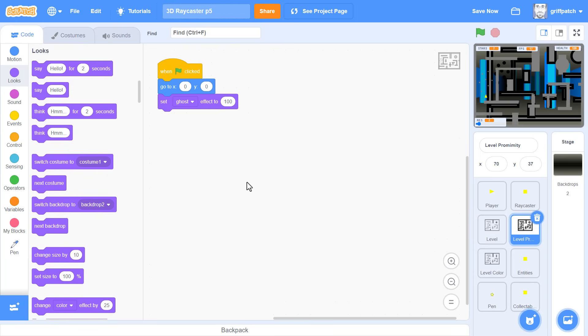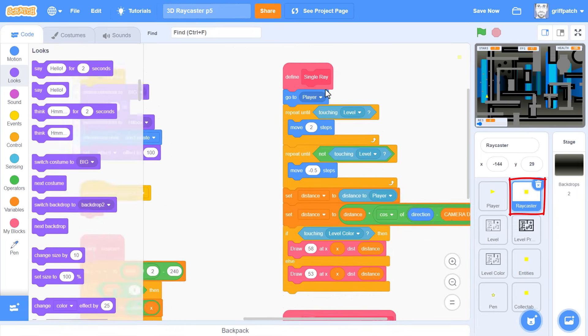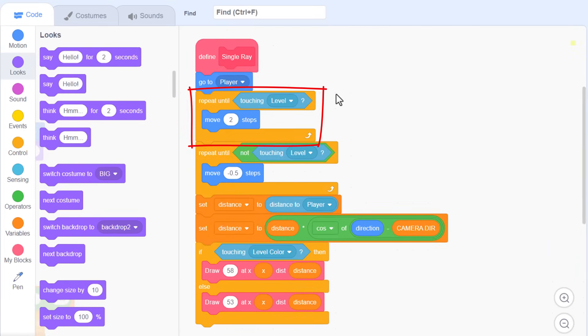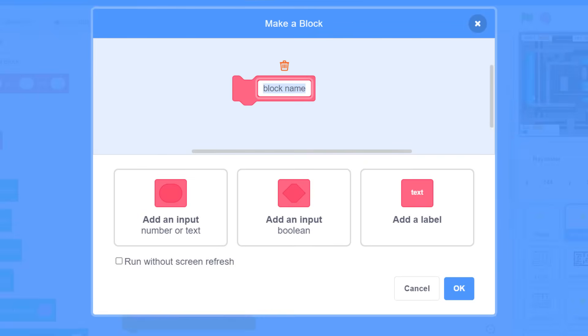And now we want to code up the special ray skipping scripts. Click into the raycaster sprite, and find the define single ray script. Yeah, here it is, and this is the simple repeat loop that scans forward 2 pixels at a time until it hits a wall.